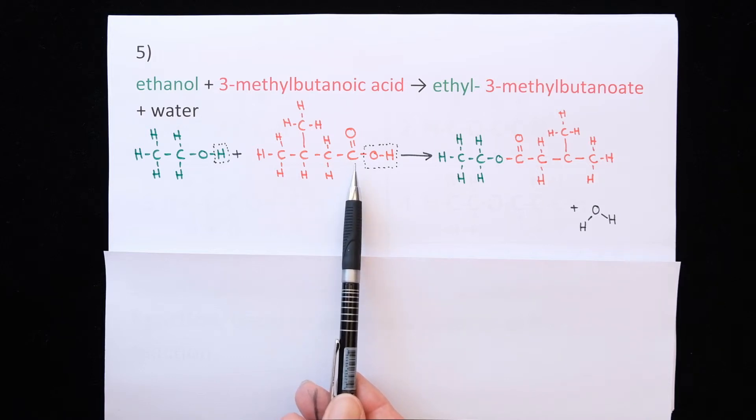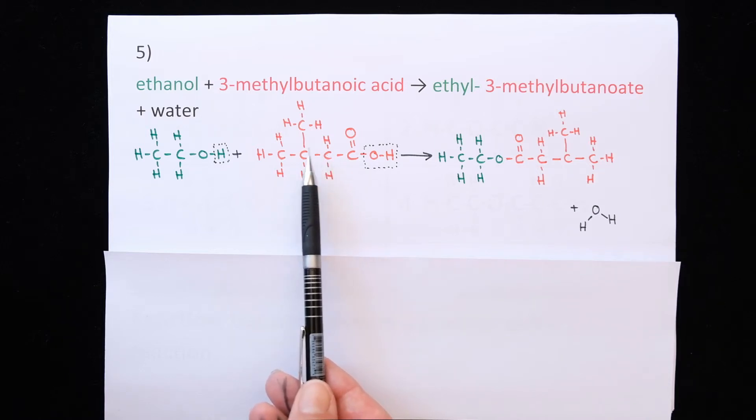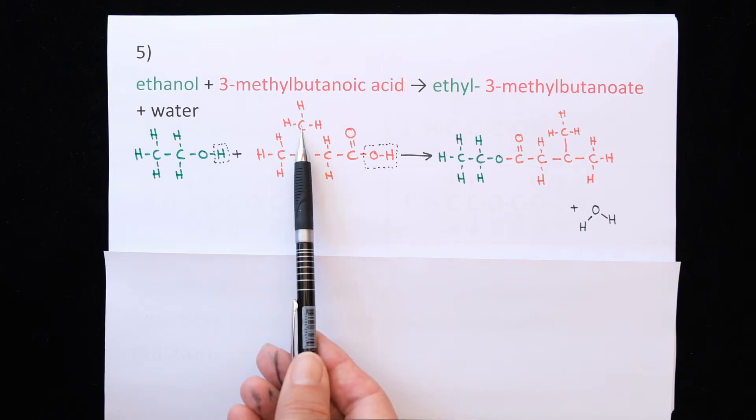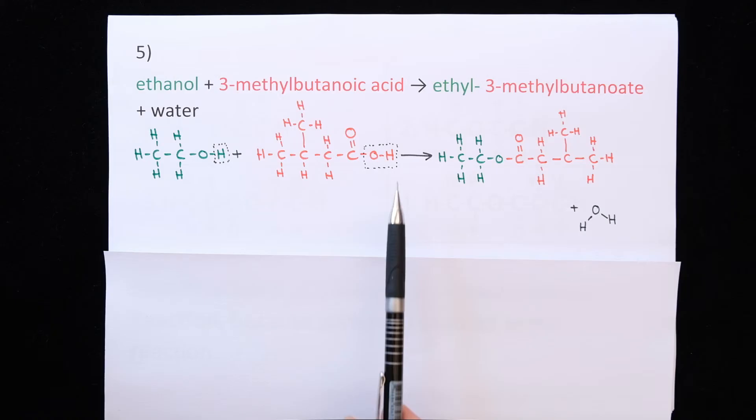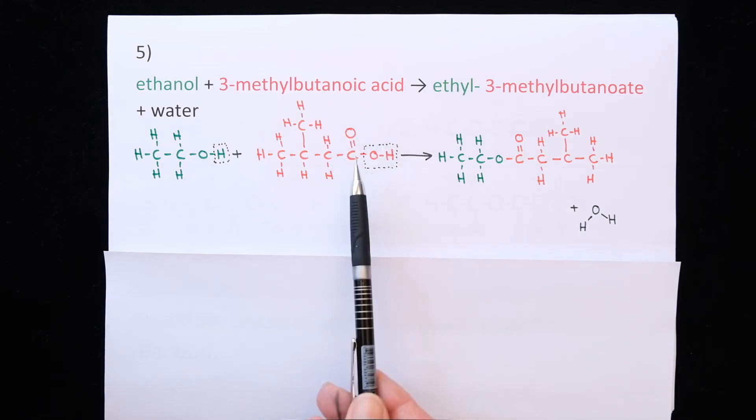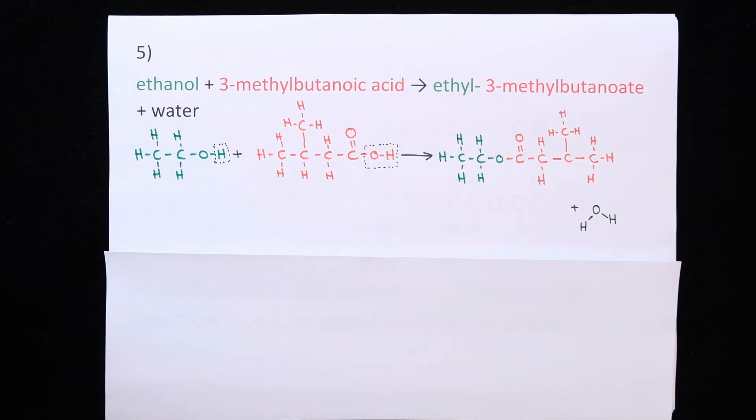So the methyl group is on carbon number three. One, two, three. The methyl group is on the third carbon. Three-methylbutanoic acid. There's your carboxyl group. You start numbering where the carboxyl group is. Everything works exactly the same as all the other examples.